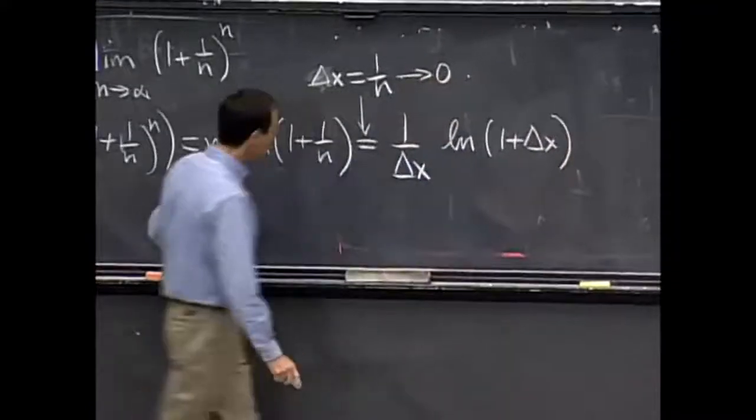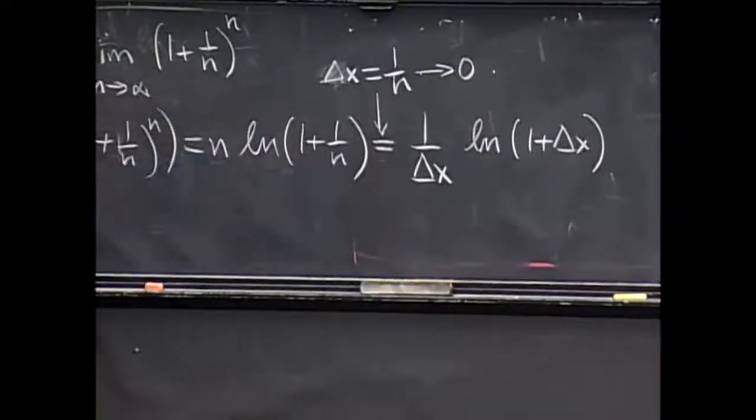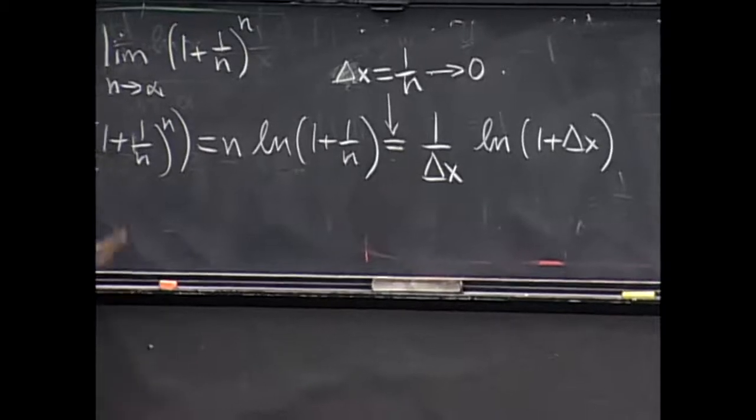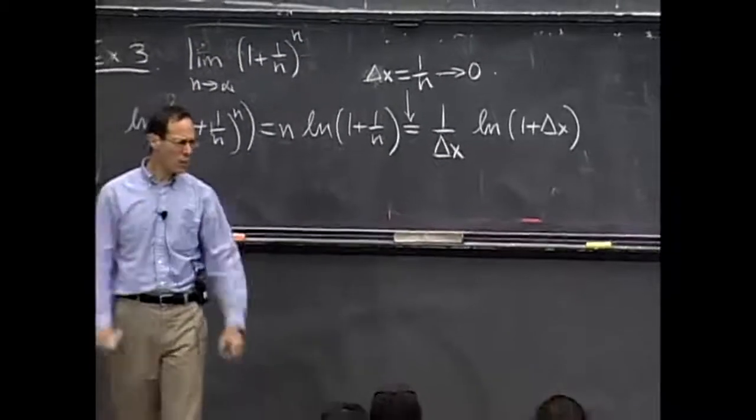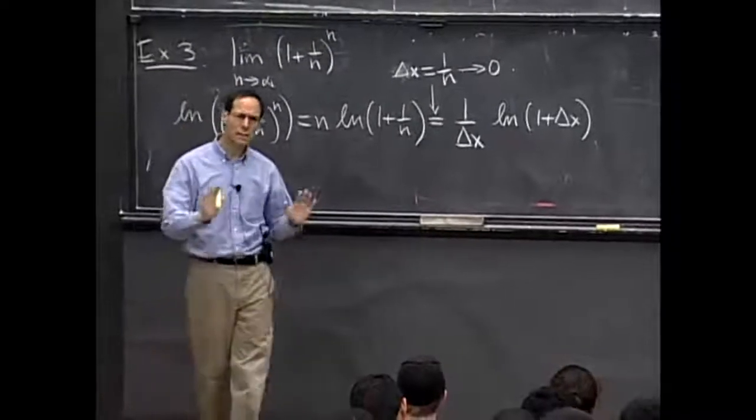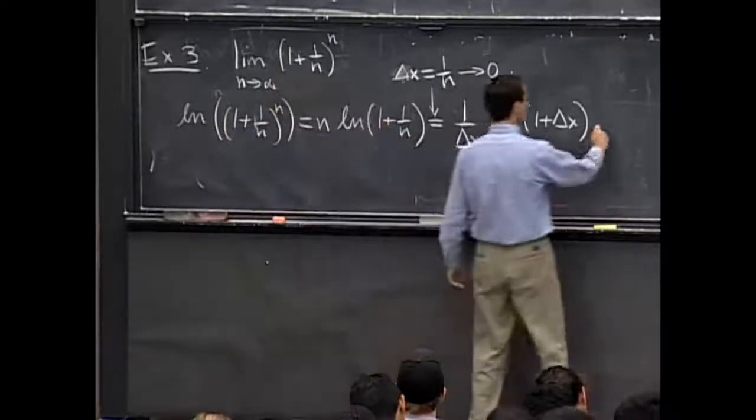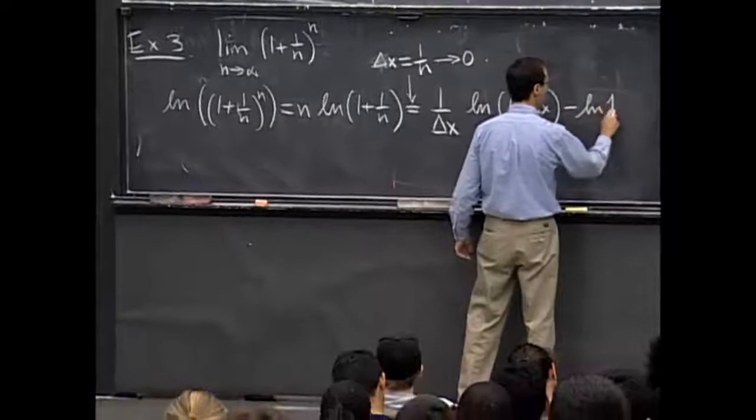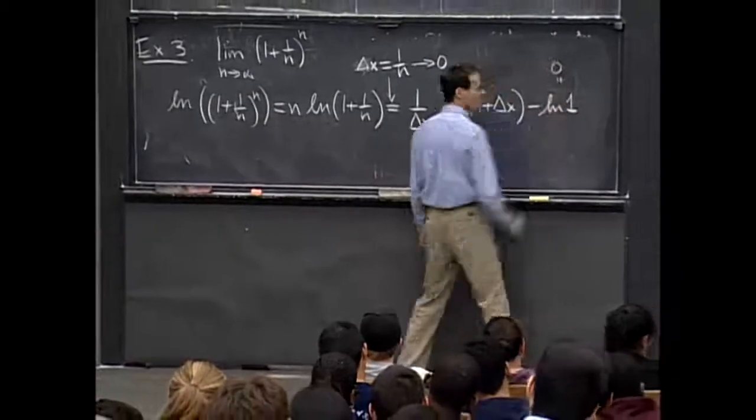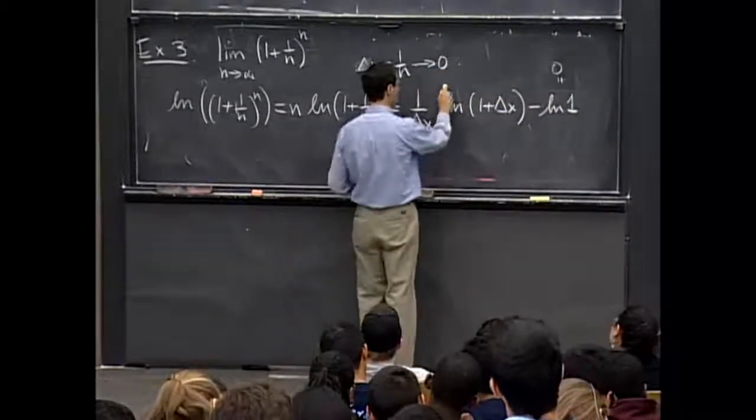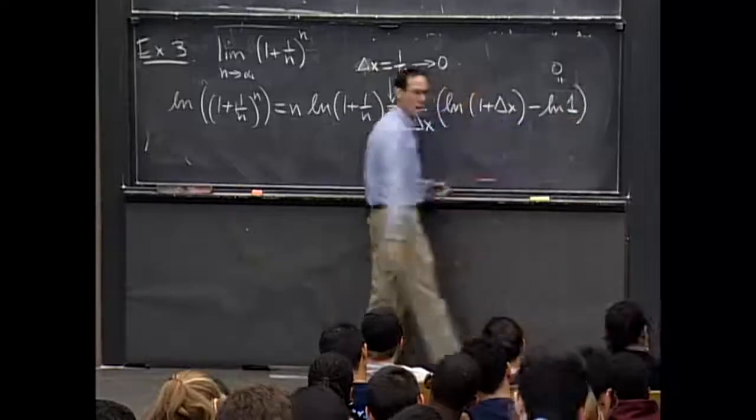All right, so n is the reciprocal of delta x. Now I want to change this in a very minor way. I'm going to subtract 0 from it. So what I'm going to do is I'm going to subtract log of 1 from it. That's just equal to 0. So this is not a problem. And I'll put some parentheses around this.